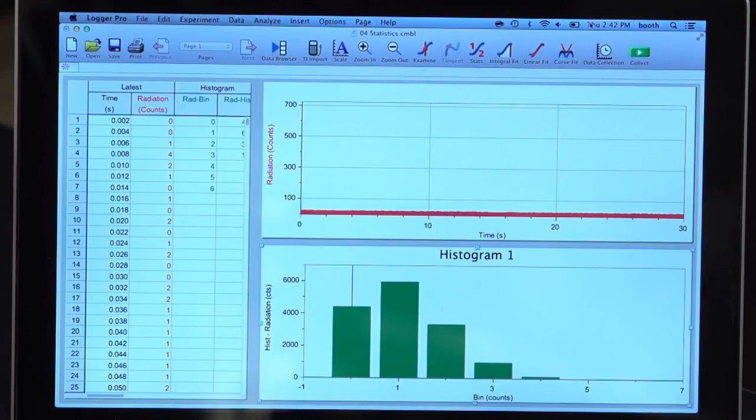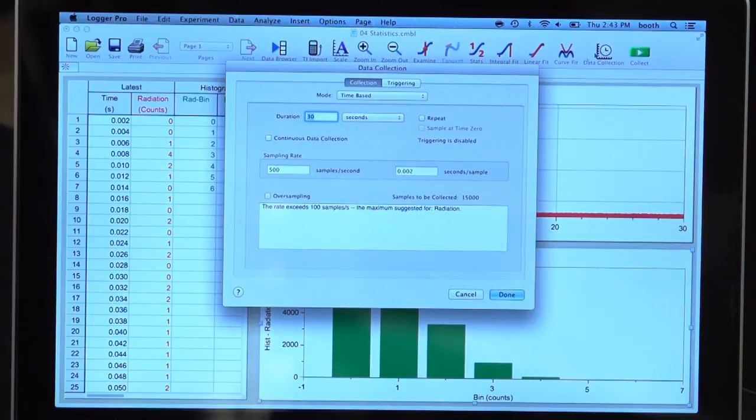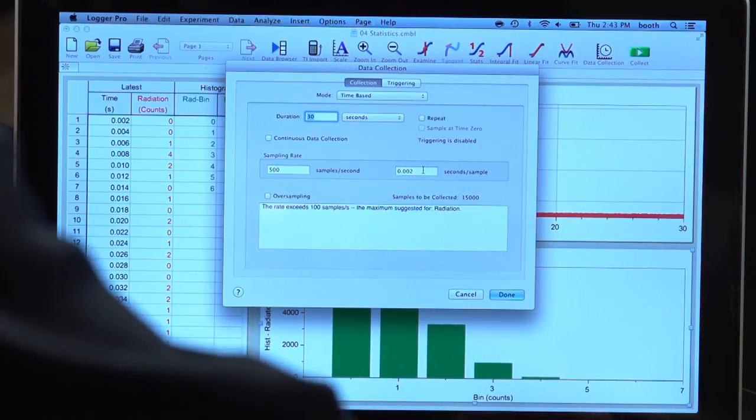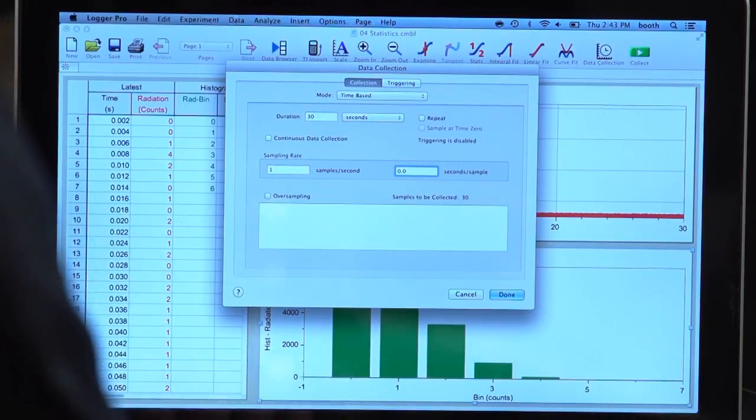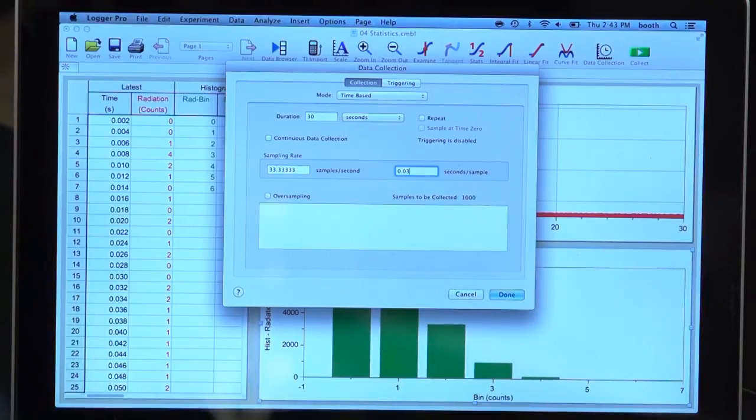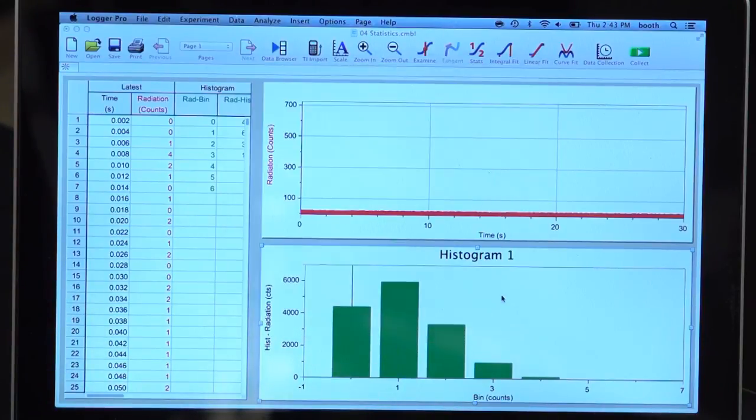Now, I can change my count interval so that the number of counts during one interval is instead about 15 or 20. If I do that, the counting statistics will be described well by Gaussian statistics. So I'm going to go in and change my count interval. You can see here that it had been set down to about 2 milliseconds. I'm going to change that to 30 milliseconds. And I'm going to click Done.